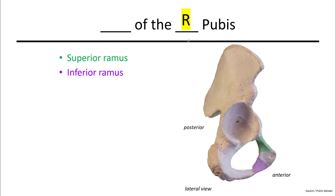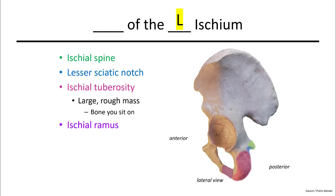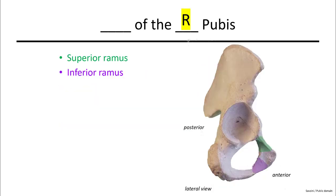The pubis has two features: the inferior ramus, which is more medial than the ischial ramus, and the superior ramus.